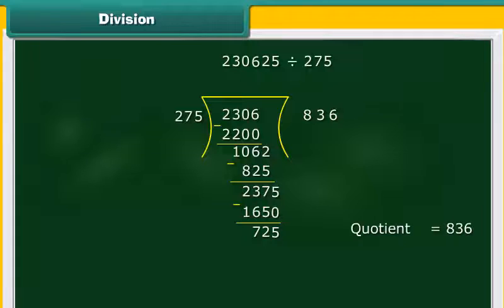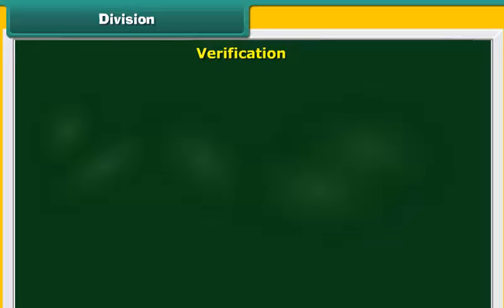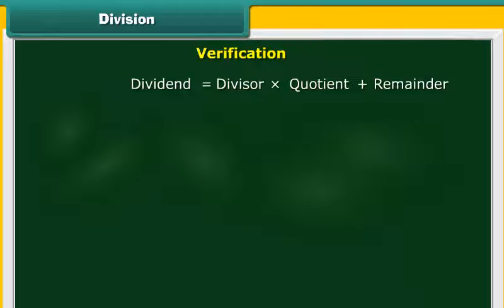Thus, the quotient is 836 and the remainder is 725. Let us now verify the division with the help of this formula: dividend is equal to divisor multiplied by quotient plus remainder.